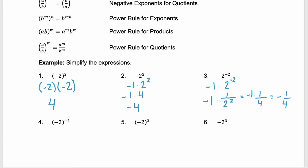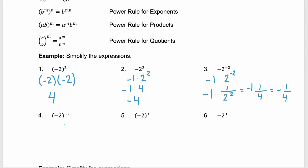In example 4, we have our negative 2 in parentheses. So that exponent of negative 2 is being applied to everything within the parentheses. Remember, the negative exponent tells you to take whatever is in the numerator and put it into the denominator. So negative 2 goes to the denominator and we change our exponent to a positive. The numerator stays as 1, and as we saw in example 1, negative 2 squared is a positive 4. So this simplifies to 1 fourth.